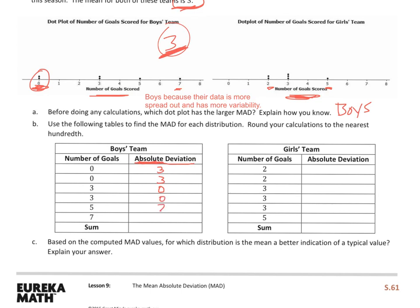So, 3 is 0 away, 3 is 0 away, 5 is 2 away, and 7 is 4 away. So, now I can calculate that, and I can add those up to get my sum, which is going to be 12. Because I'm adding my absolute deviations.